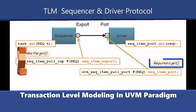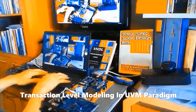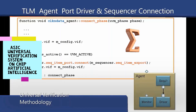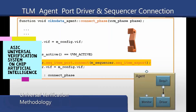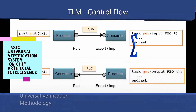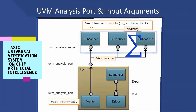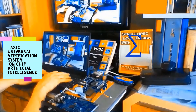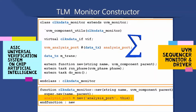The analysis port contains a list of analysis_exports that are connected to it. When a component calls analysis_port.write(), the analysis port cycles through the list and calls the write method of each connected export. If nothing is connected, the write call simply returns. Thus, an analysis port may be connected to zero, one, or many analysis exports, and the operation of the component writing to the analysis port does not depend on the number of connected exports.